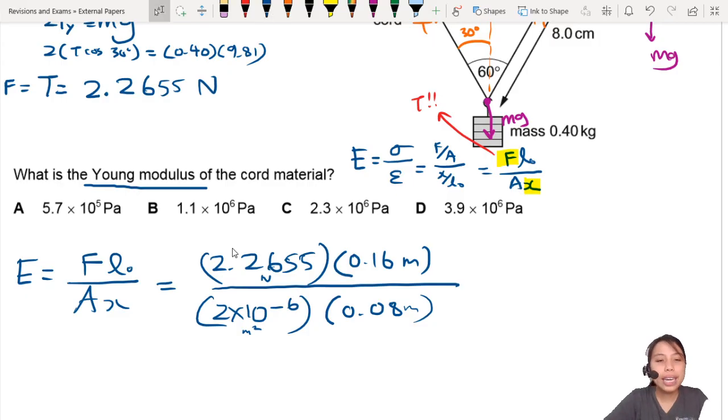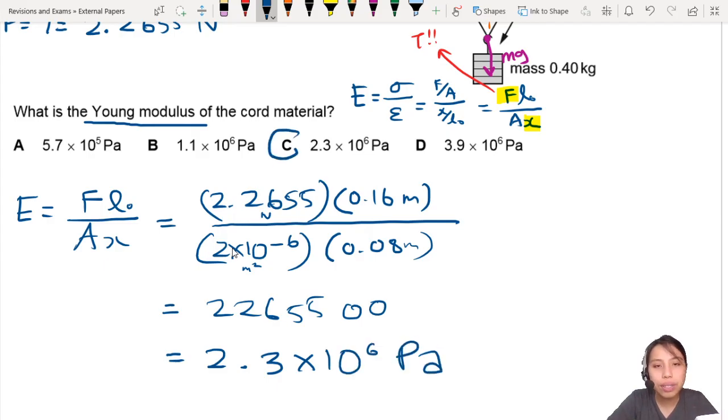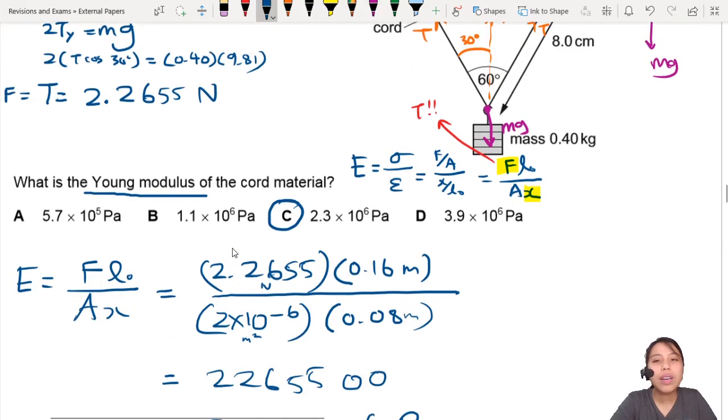Looks good. At the end of the day, press calculator, I will get 2.2655 depending on how many decimals I have for my force, or I can express it in standard form: 2.3 × 10⁶ pascals. So C is the answer for this situation.